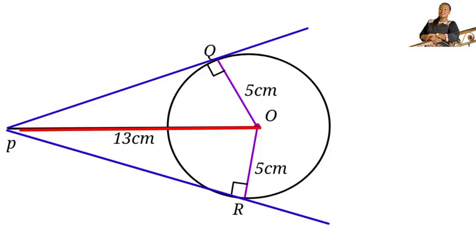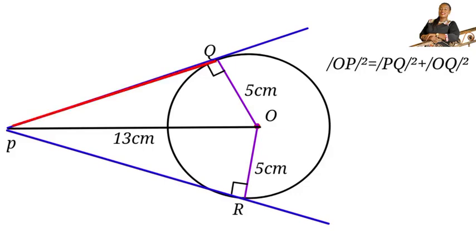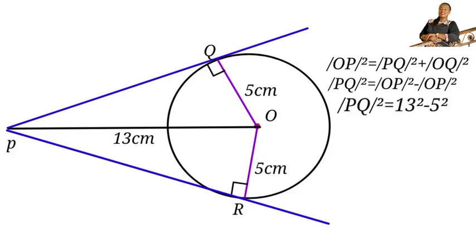Pythagoras theorem states that the square of the hypotenuse is equal to the sum of the squares of the other two sides. So in this case, it is going to be OP squared equals QP squared plus OQ squared. When we rearrange, we have QP squared equals 13 squared minus 5 squared.